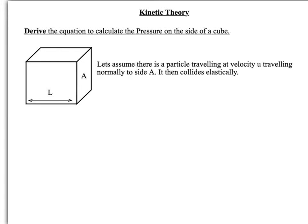Looking back at momentum from unit 4, in an elastic collision total kinetic energy is conserved. As the wall of the container isn't going to move, the kinetic energy remains with the gas particle. Going in, it will have momentum MU, and going out it will have momentum minus MU. So the change in momentum is MU minus (minus MU), which is 2MU.